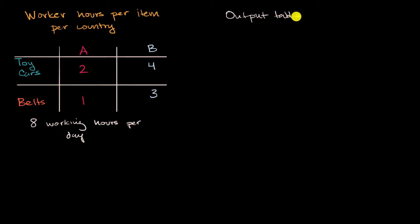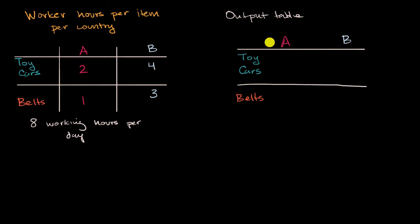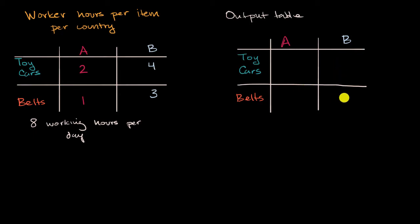Output table. We're going to think about the output in country A, the output in country B — specifically, how many units of that product can a worker produce per day in each of those countries? We're going to have toy cars in one row and belts in the other. See if you can fill these in: how many toy cars per worker per day can we produce in country A? Then think about it for belts, and then think about both for country B. Pause the video and try to figure that out.